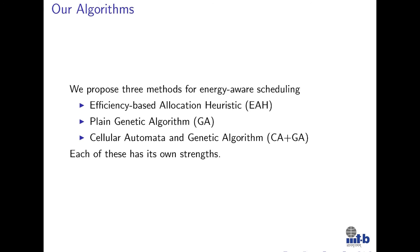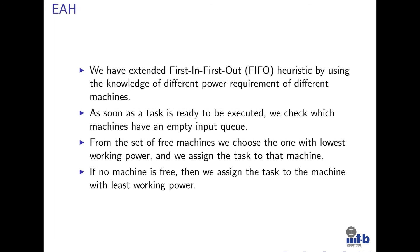We have proposed three algorithms: the efficiency-based allocation heuristic, the plain genetic algorithm, and the combination of cellular automata and genetic algorithm. For the first algorithm, the efficiency-based allocation heuristic: the heuristic proceeds towards locally optimal results, and it is hoped that the combination of locally optimal decisions yields a globally optimal or at least a good result. Heuristic-based algorithms are very fast and have steady performance, but generally reach some suboptimal solution. We extended the first-in-first-out heuristic by using knowledge of different power requirements of different machines. As soon as a task is ready, we check which machines have an empty input queue; from the free machines we choose the one with the lowest working power and assign the task to it. If no machine is free, we assign the task to the machine with the least working power.